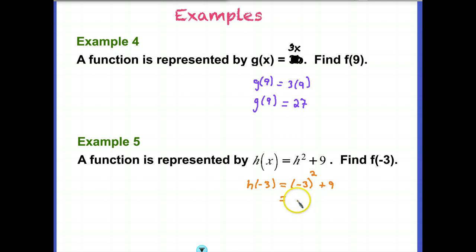-3 times -3 is positive 9. When you add the other 9 to it, we get 18. So be careful of your exponents. We had a review with that earlier. All right, and that concludes our lesson on function notation.